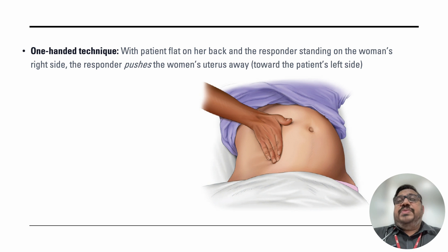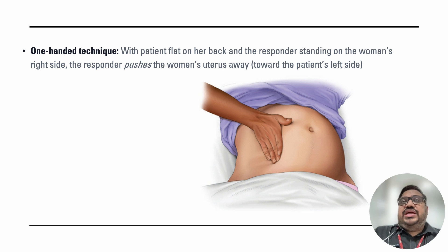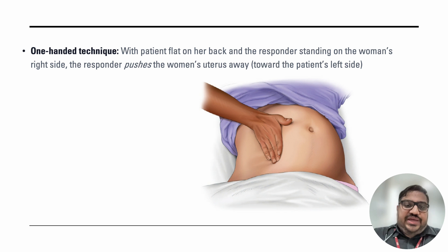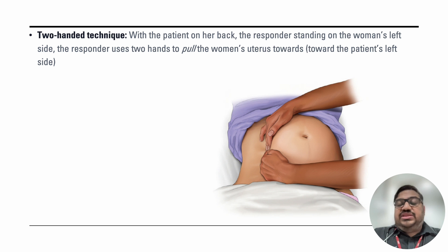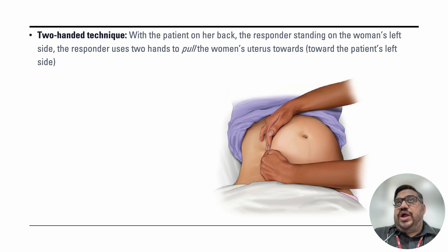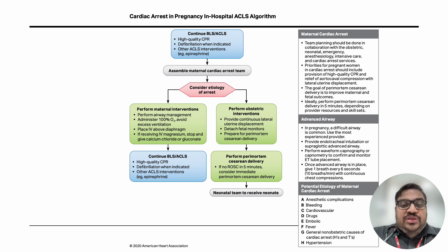When a patient has a maternal cardiac arrest, the first step is to activate your maternal cardiac arrest team — obstetrician and pediatrician or neonatologist must be available. The very first intervention is lateral displacement of the uterus to relieve vena caval pressure and maintain adequate venous return. There are two techniques: the one-hand technique where the responder pushes the uterus toward the patient's left side, and the two-hand technique where the responder pulls the uterus toward the patient's left side from the opposite side.